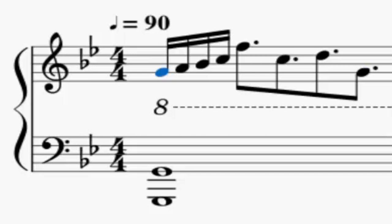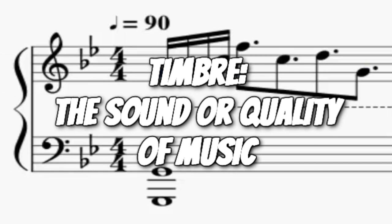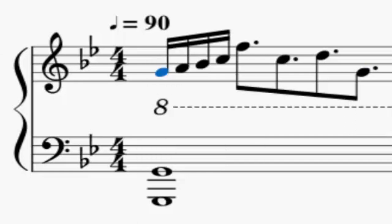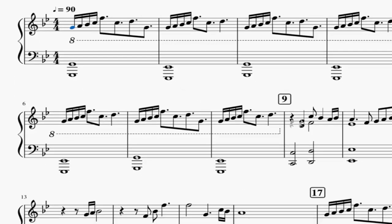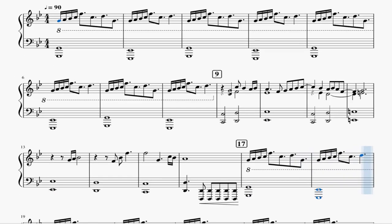Now having flats in a key signature gives the piece an overall darker timbre, which is defined as the sound or quality of music. Take a quick listen to the beginning of the piece in G minor, and then what I'm going to do is I'm going to rearrange it so that it's actually in G major, the parallel major.